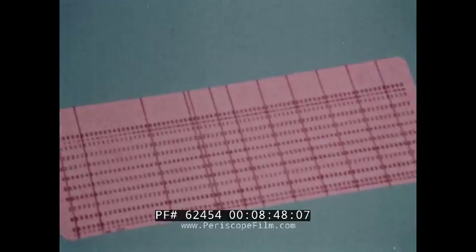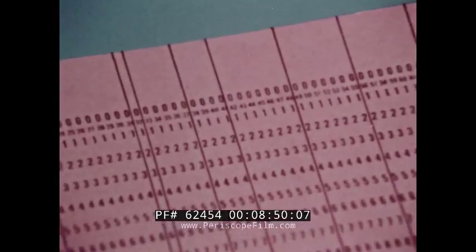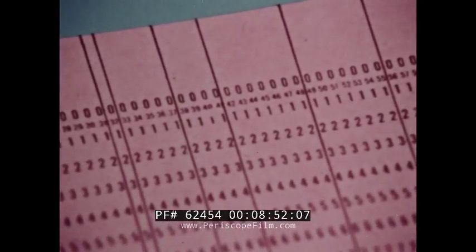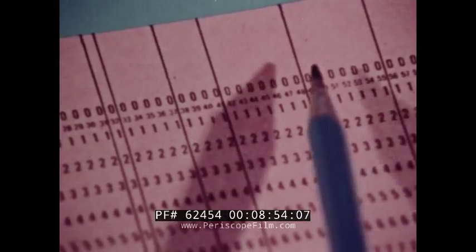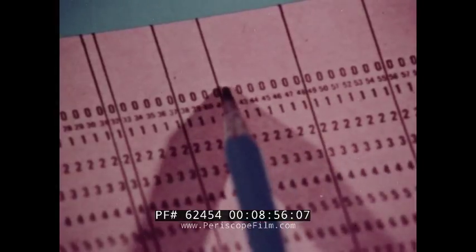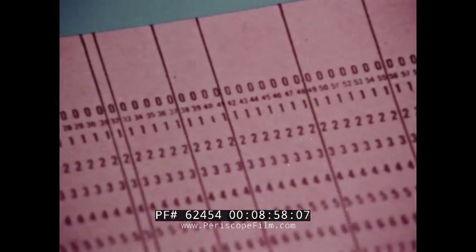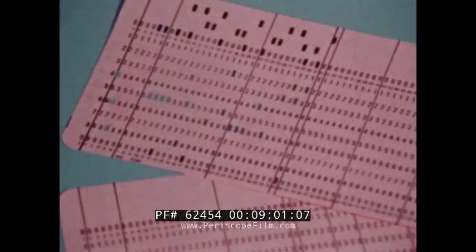The card must be organized to hold the data. Columns are broken into groups and these groups are called fields. A field can be from one to all 80 columns, depending on the number of columns needed to contain the information to be recorded.